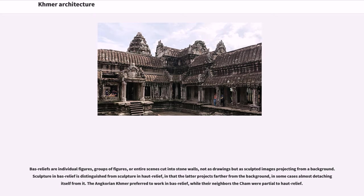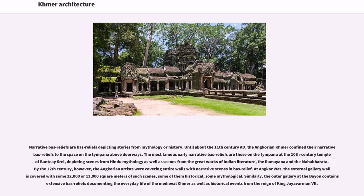Bas-reliefs are individual figures, groups of figures, or entire scenes cut into stone walls — not as drawings but as sculpted images projecting from a background. Sculpture in bas-relief is distinguished from sculpture in haute-relief, in that the latter projects farther from the background, in some cases almost detaching from it. The Angkorian Khmer preferred to work in bas-relief, while their neighbors the Cham were partial to haute-relief. Narrative bas-reliefs depict stories from mythology or history. Until about the 11th century AD, the Angkorian Khmer confined their narrative bas-reliefs to the tympana above doorways. The most famous early narrative bas-reliefs are those on the tympana at the 10th-century Temple of Banteay Srei, depicting scenes from Hindu mythology as well as the Ramayana and the Mahabharata. By the 12th century, Angkorian artists were covering entire walls with narrative scenes; at Angkor Wat, the external gallery wall is covered with some 12,000 to 13,000 square meters of such scenes, some historical, some mythological.